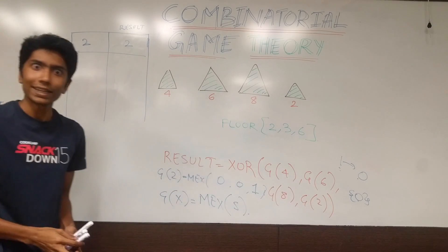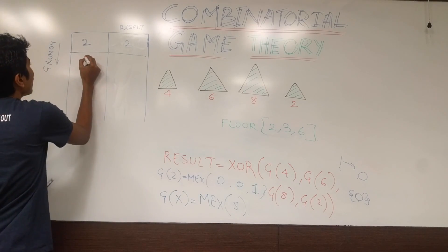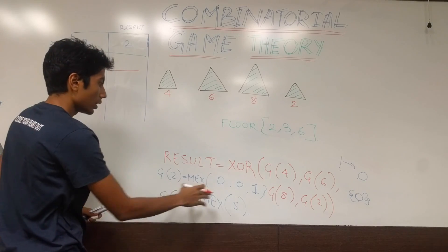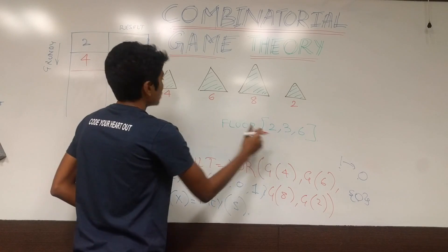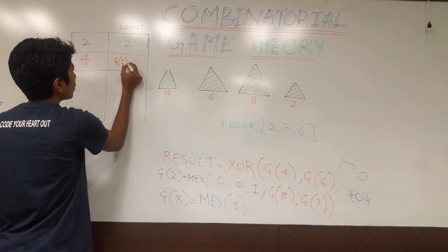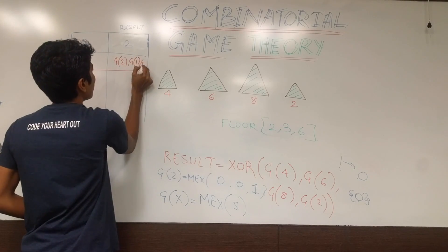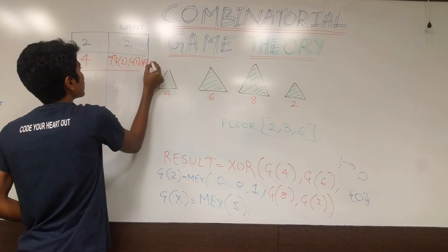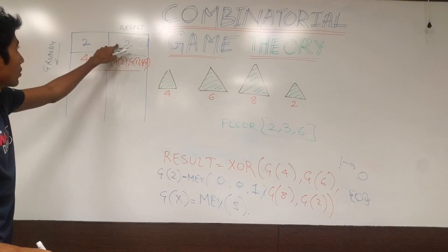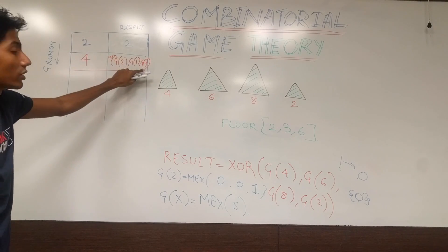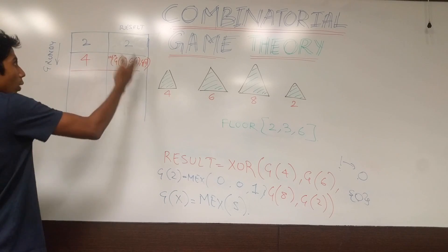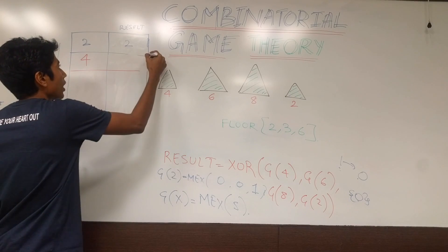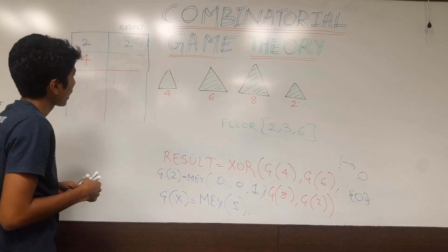What about Grundy(4)? The possible states from 4 are: floor(4/2)=2, floor(4/3)=1, floor(4/6)=0. So mex of {Grundy(2), Grundy(1), Grundy(0)} = mex of {2, 1, 0} = 3. So Grundy(4) = 3.